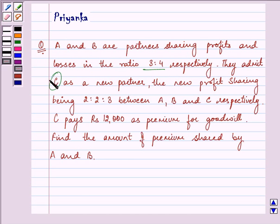They admit C as a new partner, the new profit sharing ratio being 2 is to 3, 2 is to 2 is to 3 between A, B and C respectively.